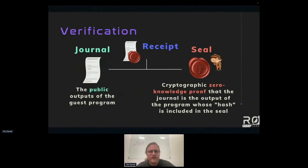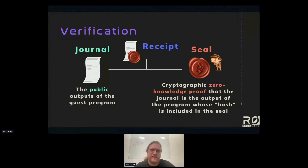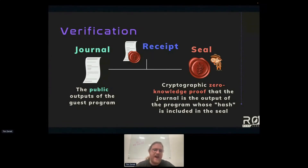On the verifier end, we're thinking about the architecture of the receipt. All the verifier does is inspect the receipt and confirm the outputs, and that this is a good proof the code really was executed correctly. The receipt has two components: the journal and the seal. The journal contains the public outputs of the program — if you write it to the journal, anyone can see it. The seal contains the cryptographic information the verifier needs to confirm the proof was faithfully executed. It also includes a hash of the program, saying this is the program that was proven.